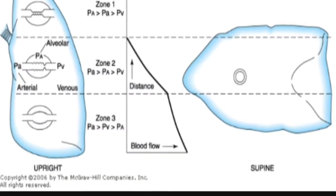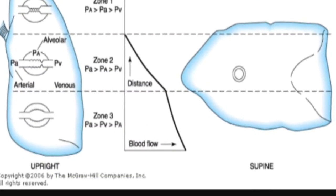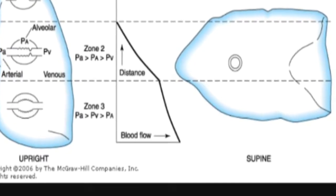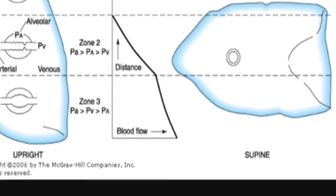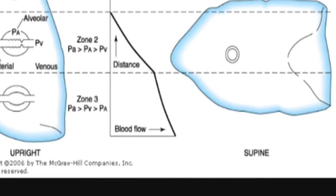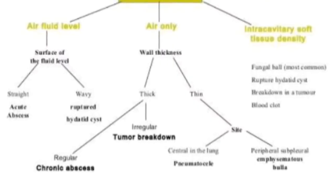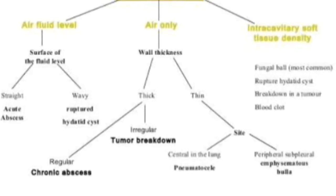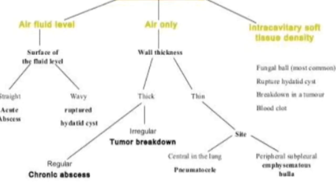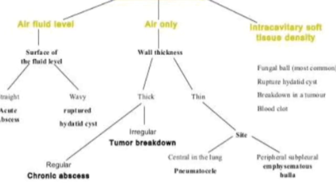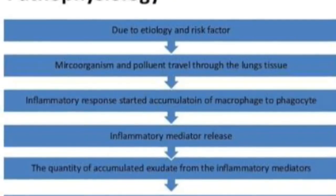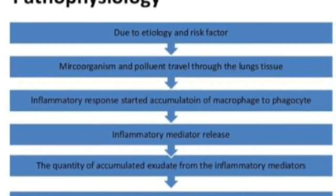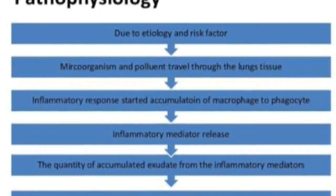Poor oral hygiene and dental caries are risk factors for development of lung abscess. Abscess following aspiration usually has a polymicrobial flora containing gram-negative bacilli and anaerobes.